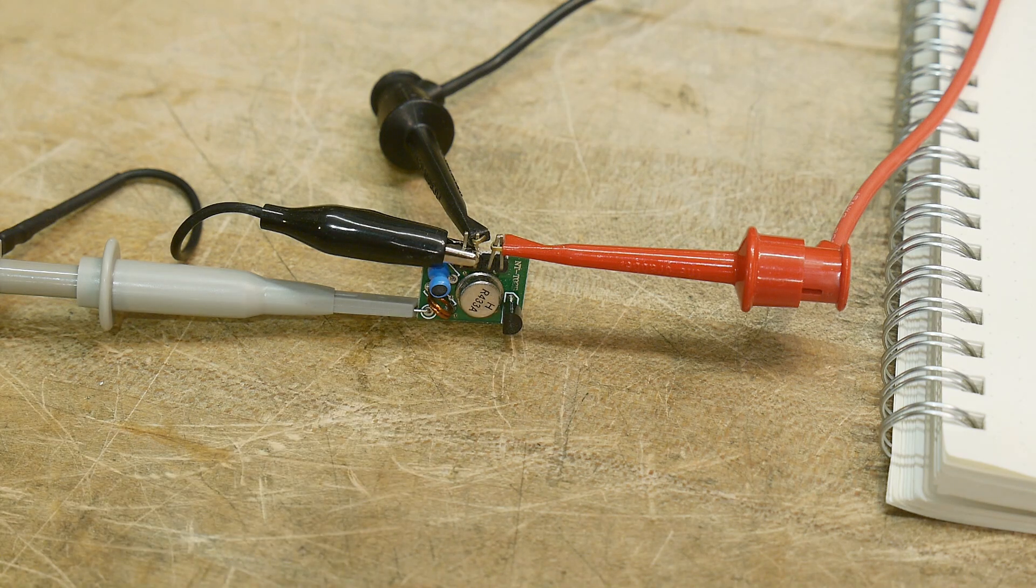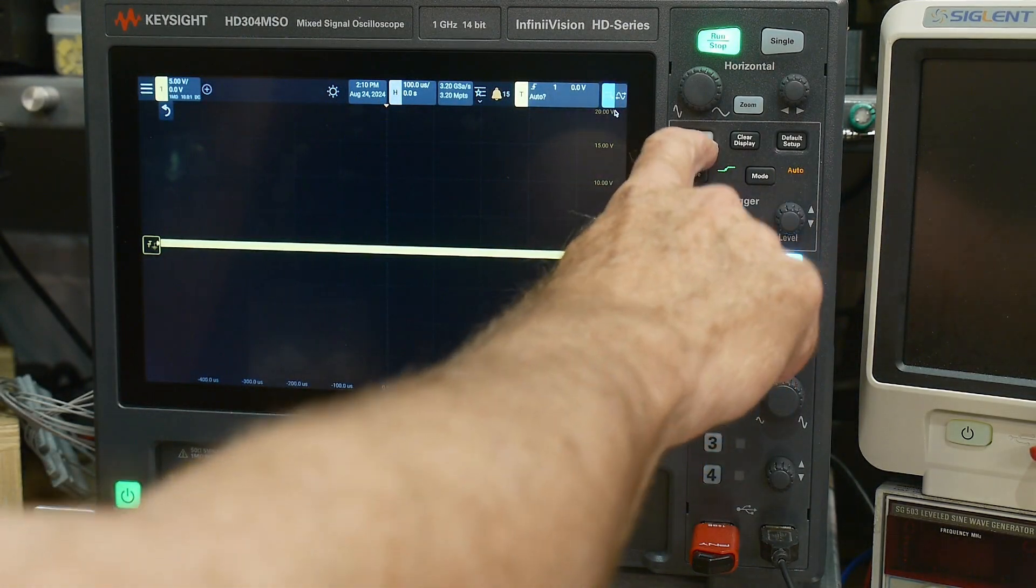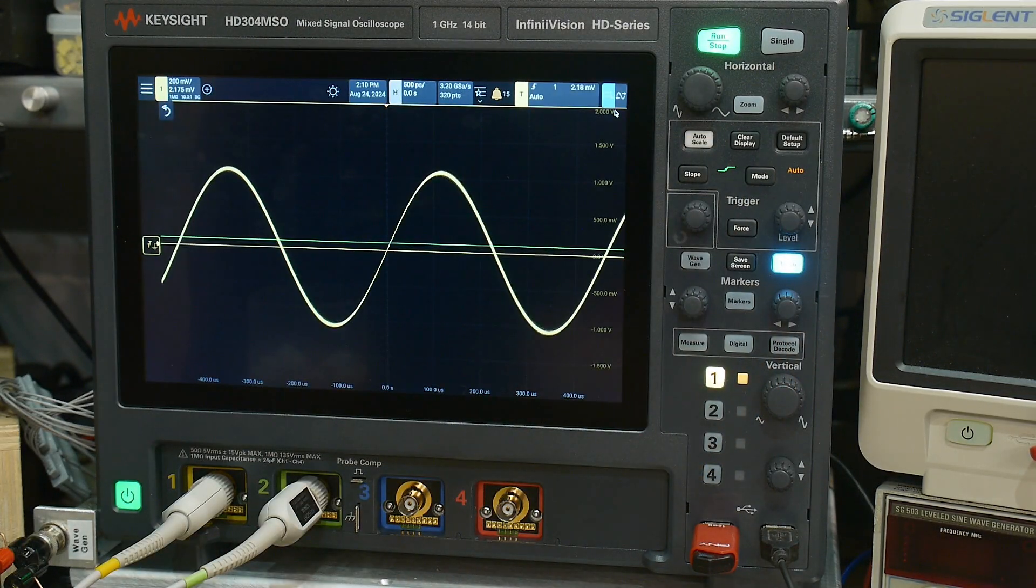Anyway, so we have this set up and let's take a look at it on the oscilloscope. All right, let's do auto scale, see what we got here. There we go.